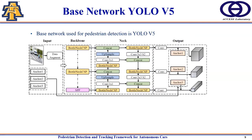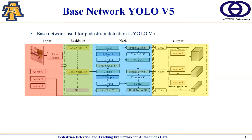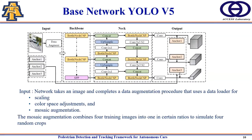Our base network is YOLOv5, which has four main sections: input, backbone, neck, and output. In the input section, the network takes an image and performs data augmentation including scaling, color space adjustment, and mosaic augmentation. Mosaic augmentation, first introduced in YOLOv4, combines four training images into one at a certain ratio to simulate random crops, which helps detect small-scale and partially occluded pedestrians.